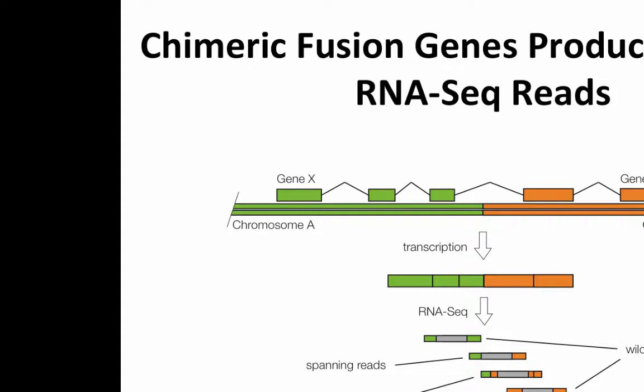Wild-type reads are evidence for gene fusions in terms of the expression information they yield. A spanning read will span the gene fusion boundary — one read maps to gene X and the other to gene Y. For a split read, the fusion boundary occurs within the read sequence itself, not within the unsequenced portion of the read in the middle. That's the distinction.